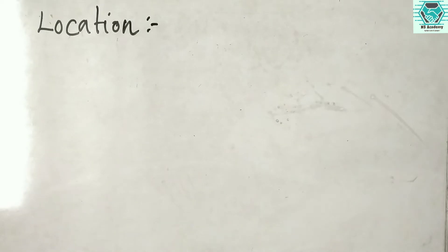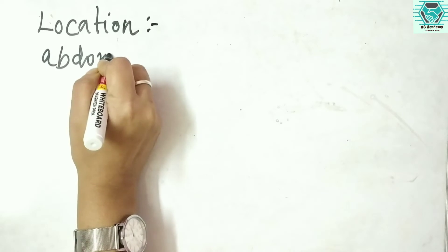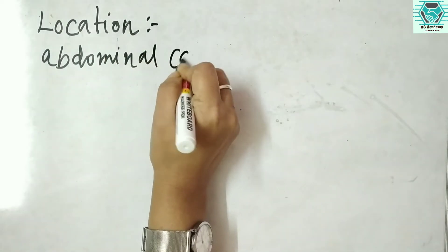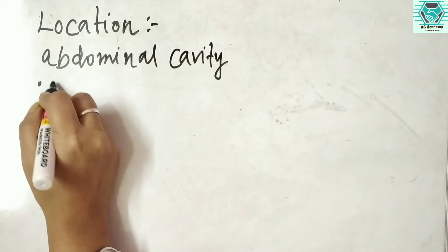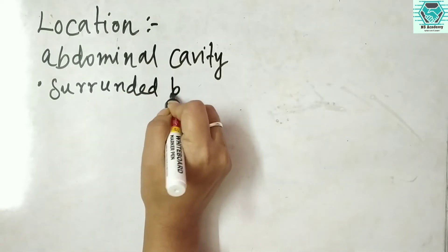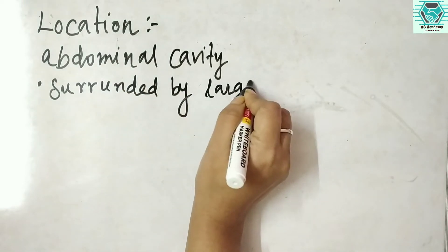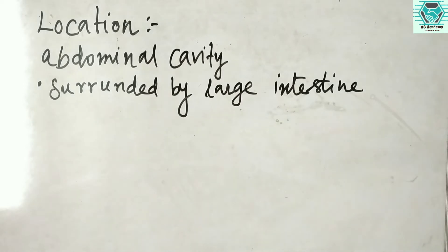The small intestine is located in the abdominal cavity, where it is surrounded by the large intestine. It is a muscular tube extending from the pyloric sphincter to the ileocecal valve.